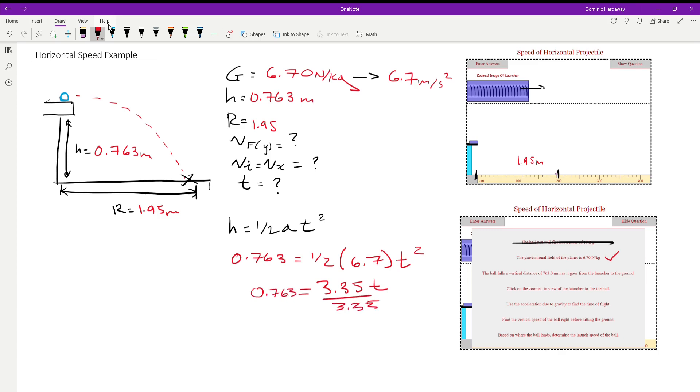And then we're going to divide 3.35 from both sides. And then we're also going to take the square root of this left side of the equation and get rid of our exponent. We're going to find that t is going to be equal to the square root of 0.763 divided by 3.35. So 0.763 divided by 3.35. Take the square root of that. And the time is going to be 0.477 seconds, or we could just call it 0.48 seconds.